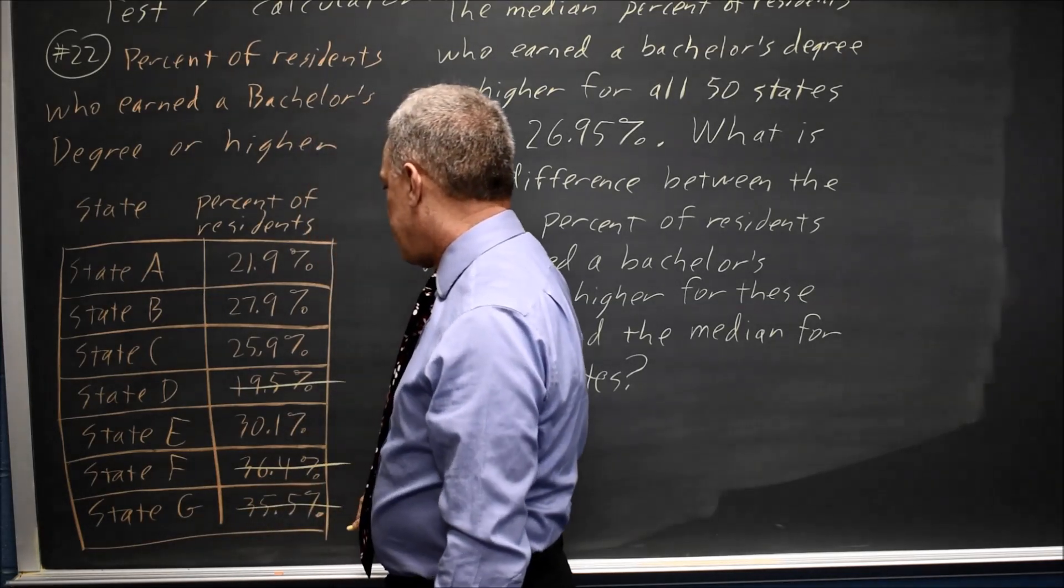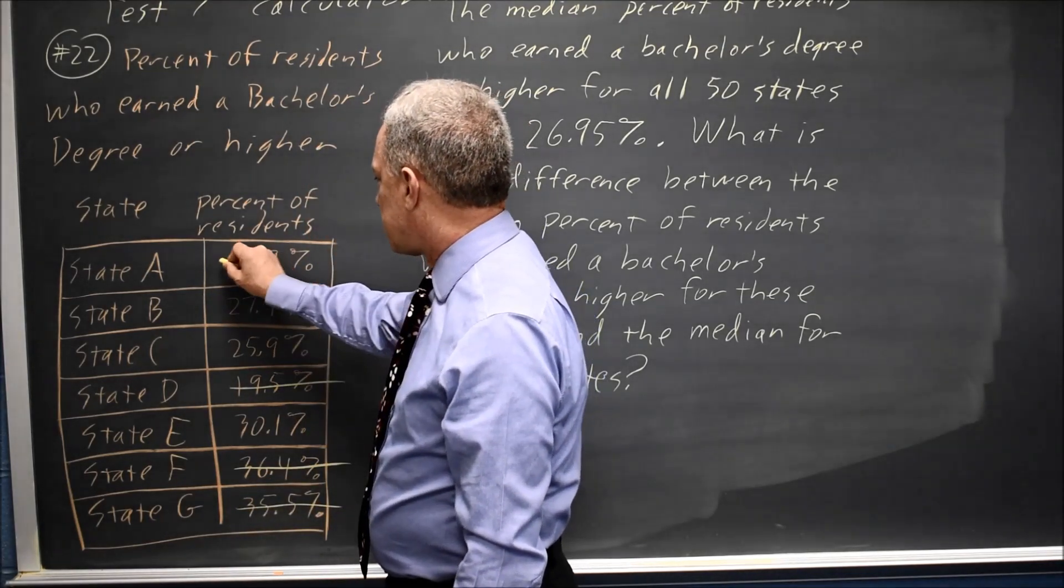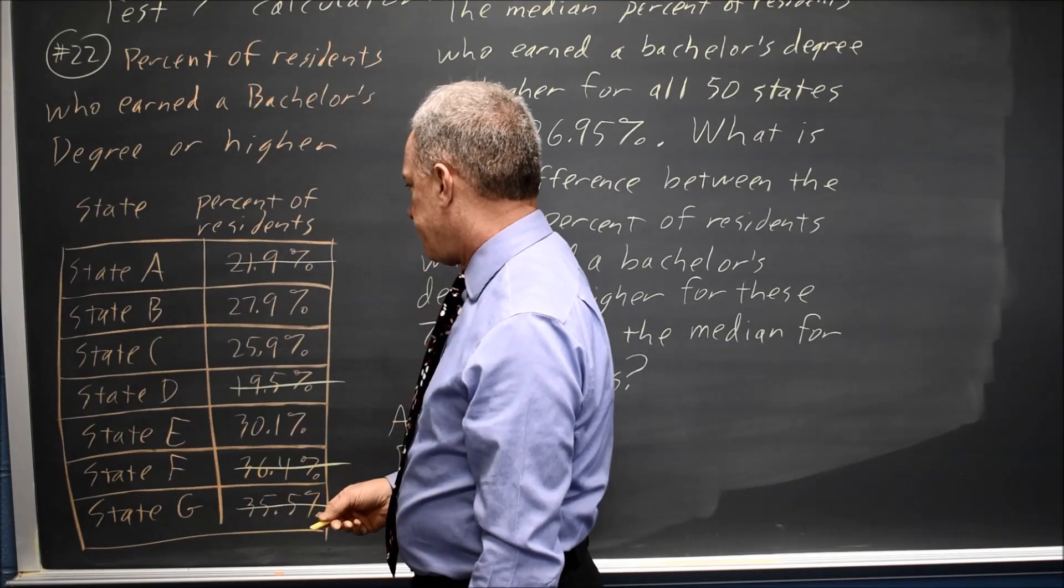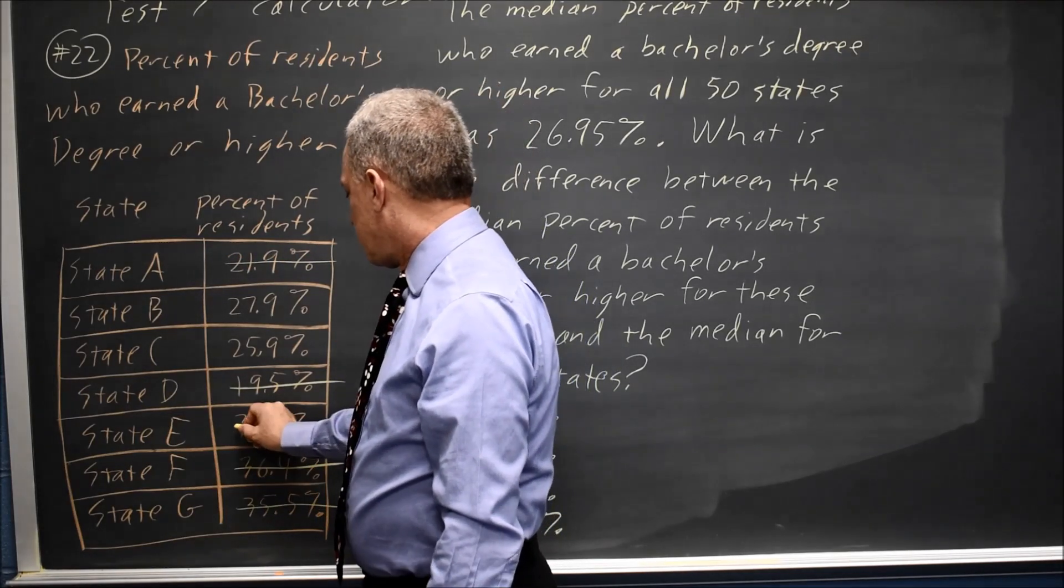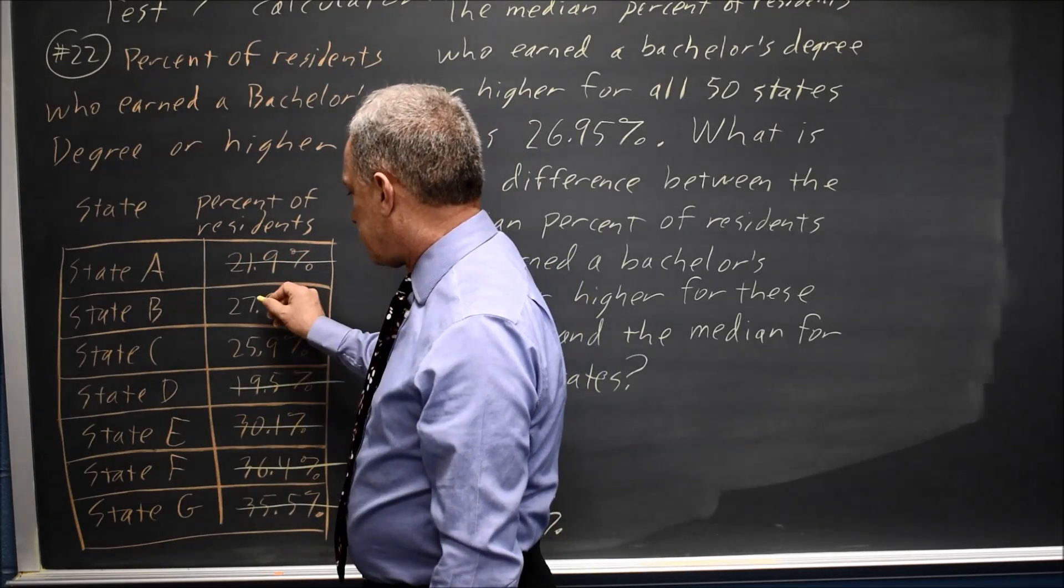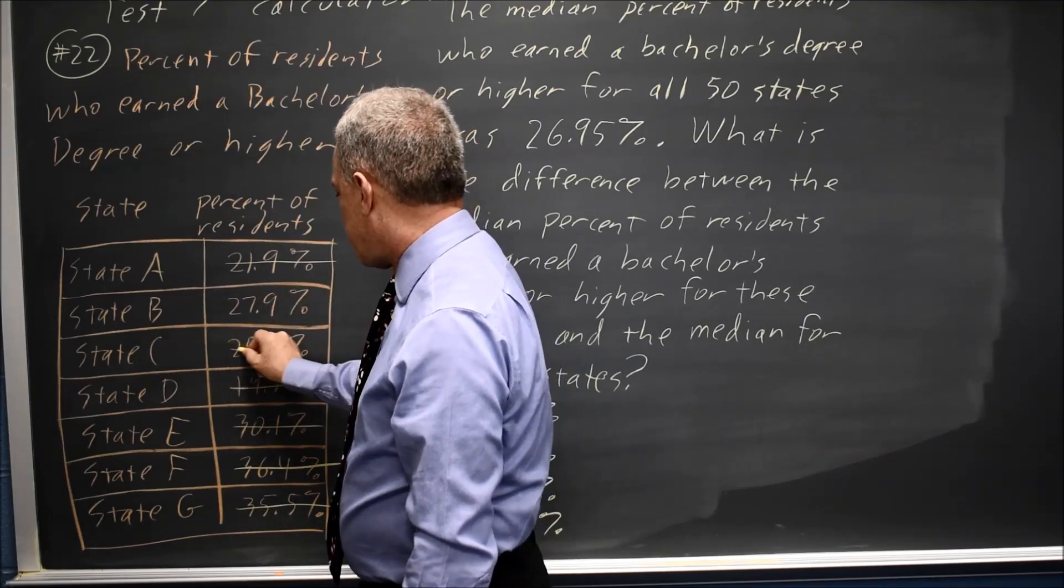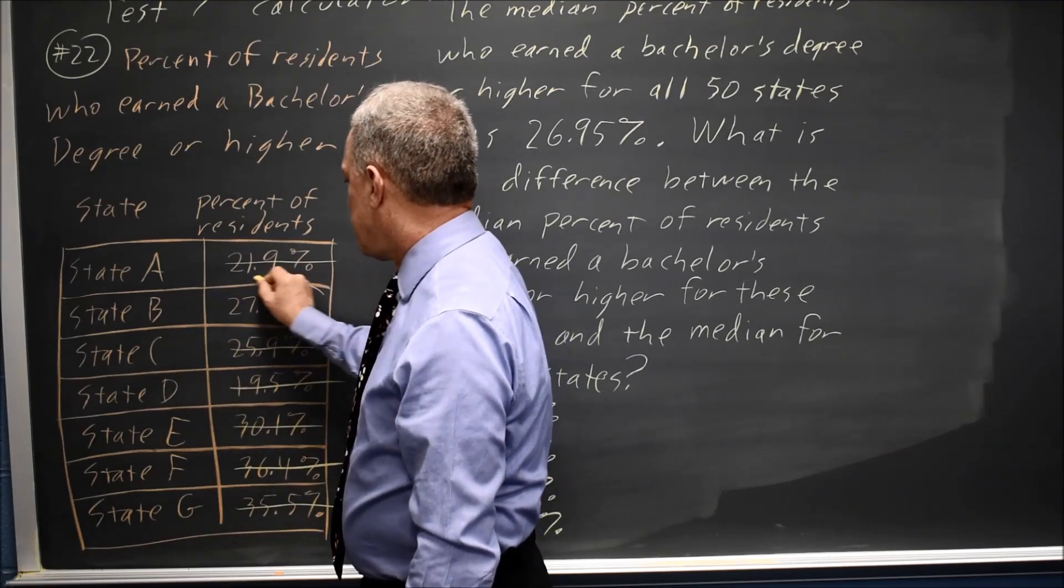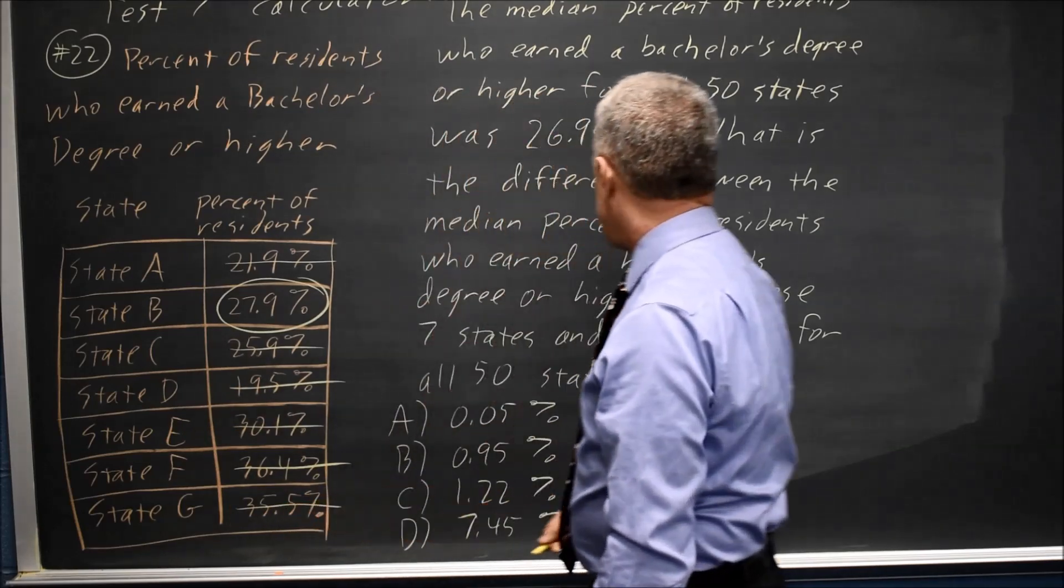A high value like 35.5 and a low value, it looks like 21.9 is my lowest. And then another high value, 30.1, and my lowest value is 25.9, leaving the median 27.9.